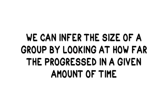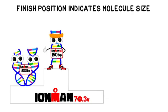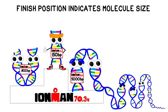Without even seeing the different teams perform, it would be easy to infer the size of a group based solely on how far they progressed through the obstacles in a given amount of time. The solo competitors would get the farthest, the small teams in the middle, and the biggest teams would progress the least far. Molecules work in much the same way as they progress through a gel.